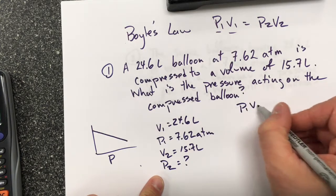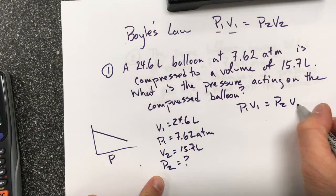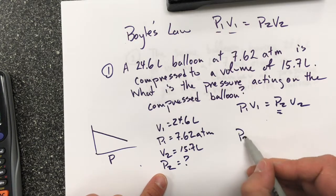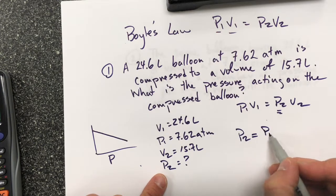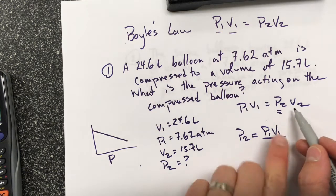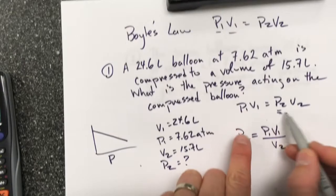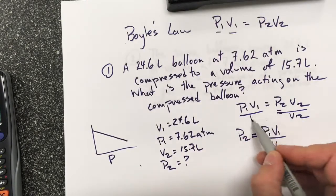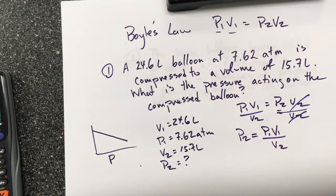Well, P1V1 equals P2V2, and I want to solve for P2. So P2 will equal P1V1 over V2. And I did that by dividing both sides by V2, and these cancel out. So I substitute into my formula.